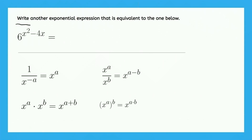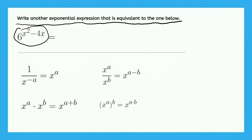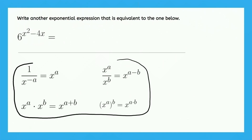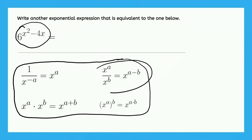So, this time, our task is to write another exponential expression that is equivalent to 6 to the power of x squared minus 4x. Here you can see the properties that we learned already as reference. Which of these properties looks like the expression that we have right here? It looks like this second one.